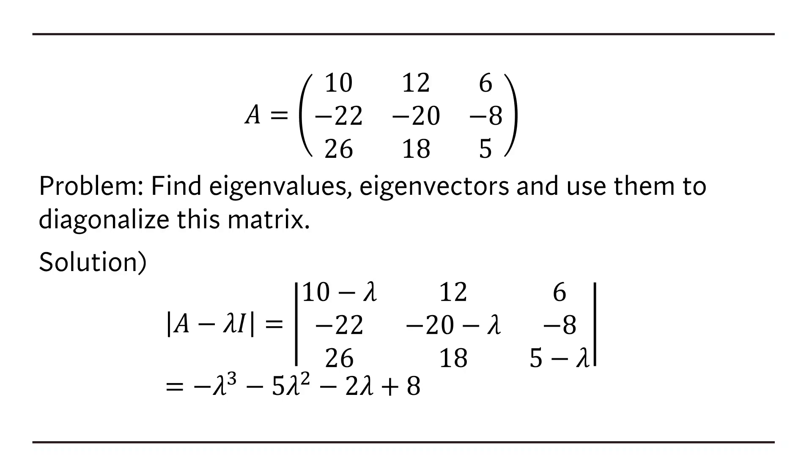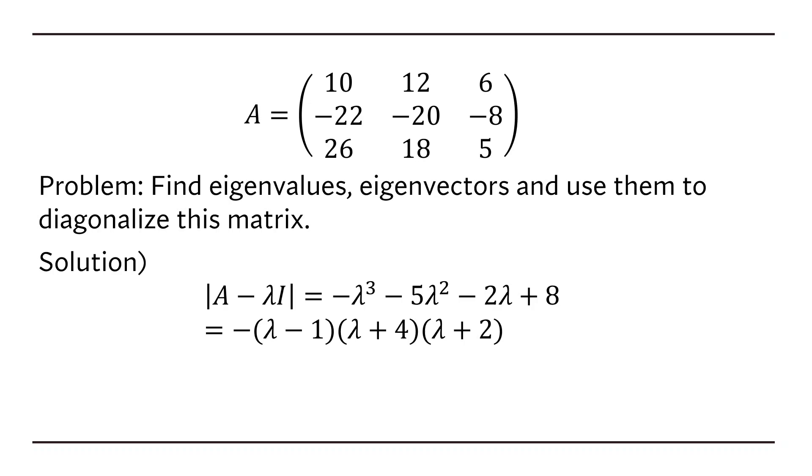For this special case, we do have a factorization of the characteristic polynomial, which immediately shows that lambda equals to 1, negative 4, and negative 2 are the solutions of the characteristic equation. So, these are distinct roots of the characteristic polynomial, so we should be able to find the eigenvector for each of these.